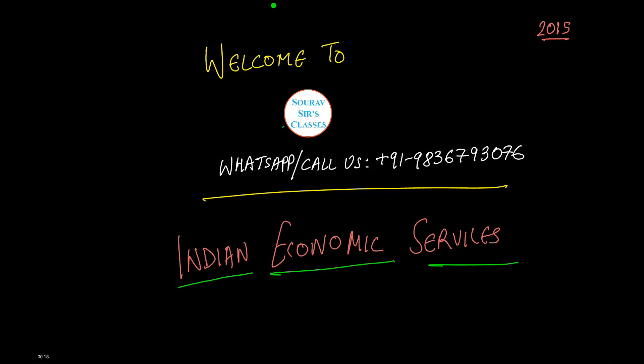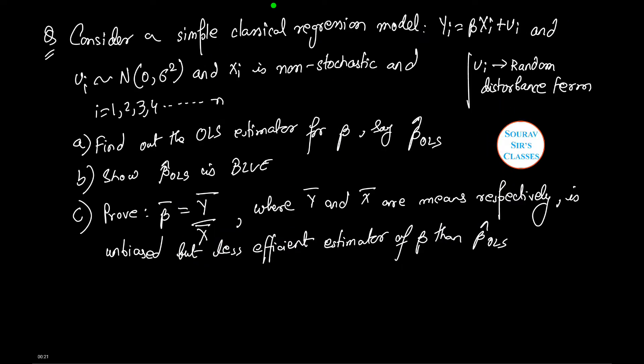Let's see the question we are given with. Consider a simple regression model: y_i equals beta x_i plus u_i, where u_i tends to normal with mean zero and variance sigma squared, and x_i is non-stochastic, where i ranges from 1, 2, 3, 4 till n.